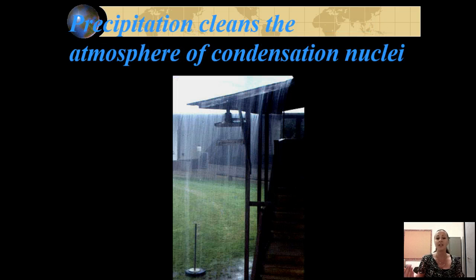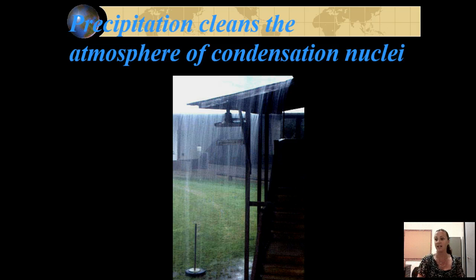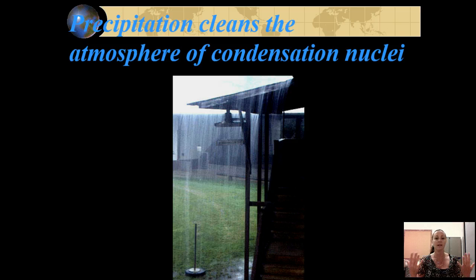Precipitation will cleanse the atmosphere of condensation nuclei, because all that condensation nuclei up there has water droplets form around it, and as it rains it brings everything back down to the ground. That could be good or bad — if it's pollution it forms acid rain, but if it's regular smoke or something naturally forming like salt, it'll just cleanse the atmosphere of the condensation nuclei.